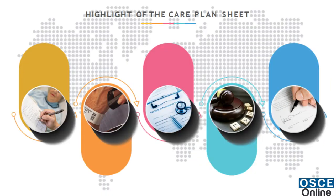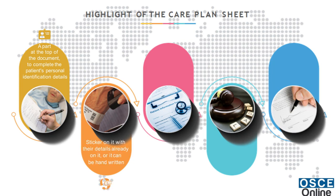Highlights of a Care Plan Sheet: There will be a part at the top of the document to complete the patient's personal identification details. It may have a sticker on it with their details already on it, or it can be handwritten.